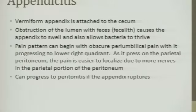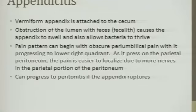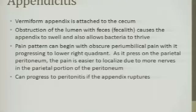What can happen is you can obstruct that lumen of the opening. That little finger-like projection has a small opening where it lets white blood cells into the cecum to contribute to the immune response. It can get blocked with poop — the fancy word for that poop blockage is fecalith. And it'll start to have a buildup of substances back into the appendix, and it'll stagnate.